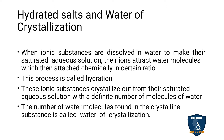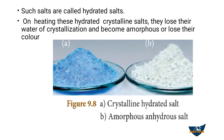Now we will see the water of crystallization. Ionic substances crystallize out from a saturated aqueous solution with a definite number of water molecules. The number of water molecules that crystallize with the ionic substance is called the water of crystallization. Such salts — crystallized with the help of water — are called hydrated salts. On heating these hydrated crystallized salts, they lose their water of crystallization and become amorphous or lose their color.